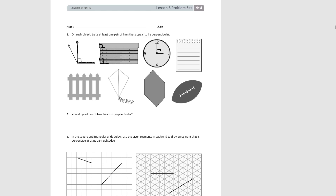These are perpendicular lines. The corners of this piece of paper are perpendicular lines. The fence posts intersect each other to make perpendicular lines. The center support on the kite is perpendicular. Now this shape here doesn't have any perpendicular lines — all the angles are either less than or greater than 90 degrees. Here the stitching on the football forms a right angle, so there are perpendicular lines.